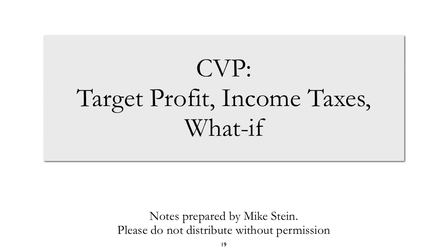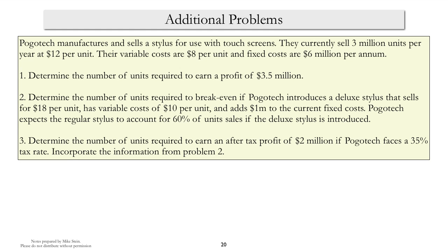In our final screencast for cost-volume-profit analysis, we'll look at target profit, income taxes, and a little bit of what-if analysis. We'll do this by using our problem from the prior screencast, but we'll add a few additional bells and whistles.